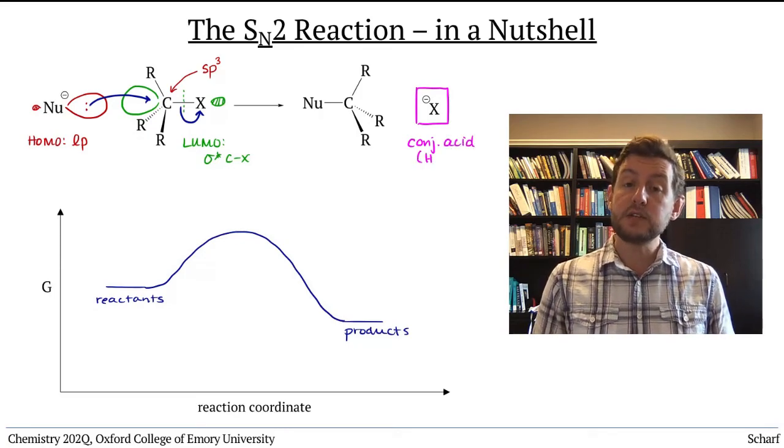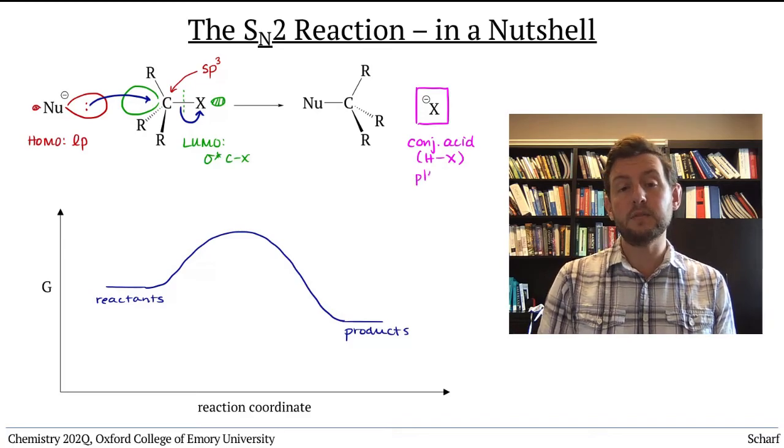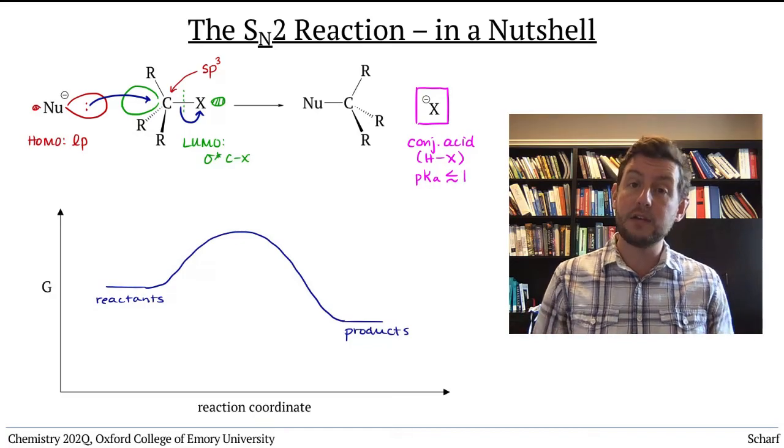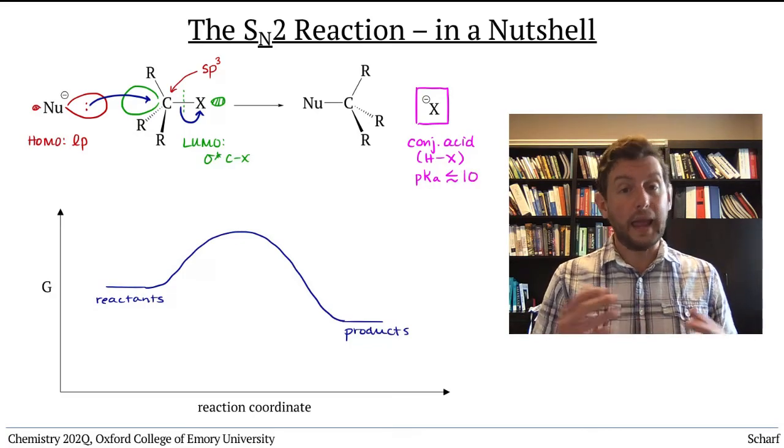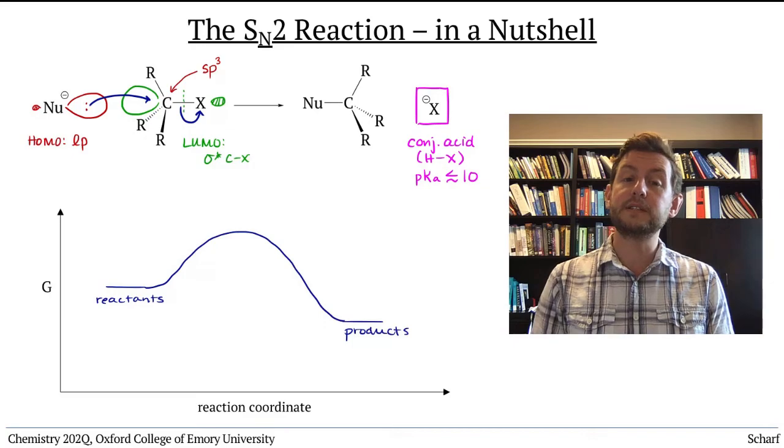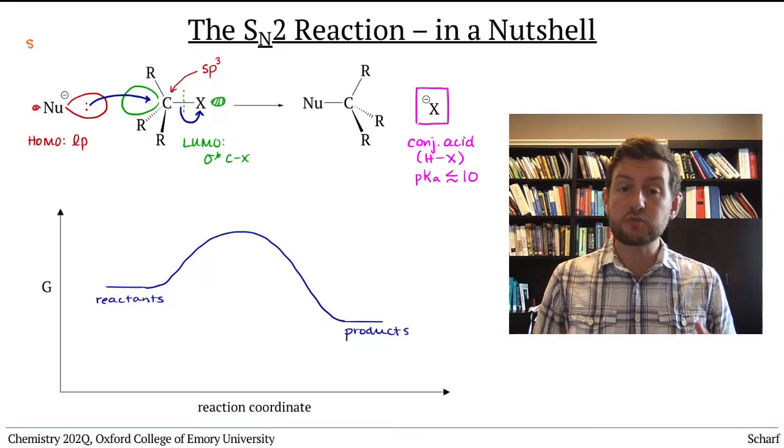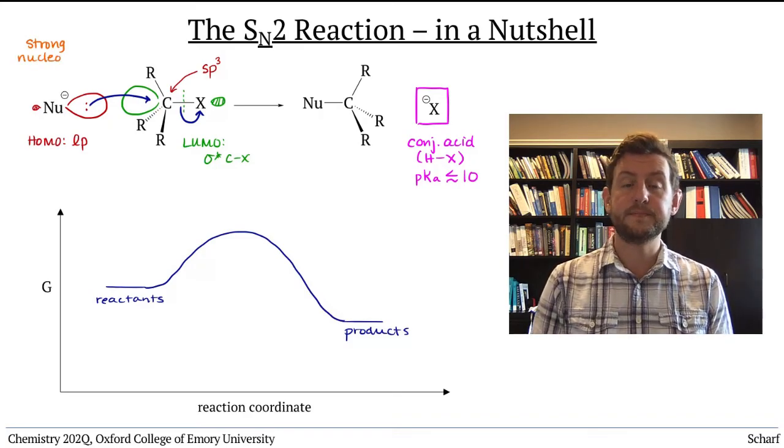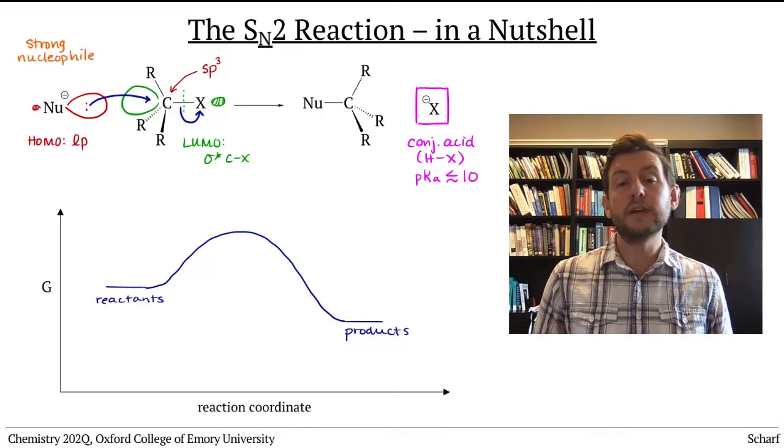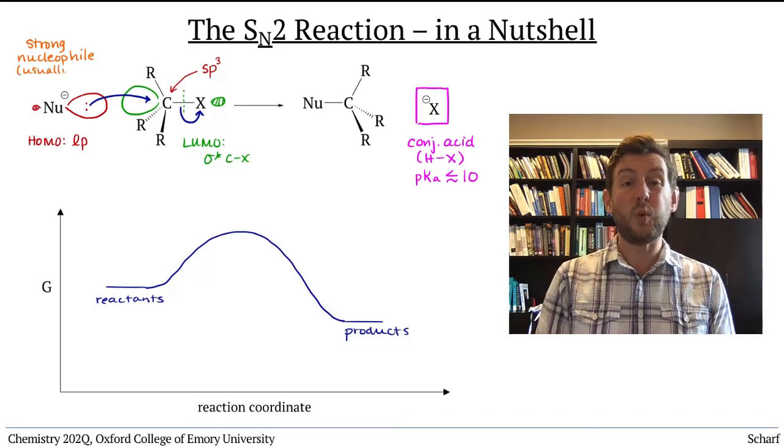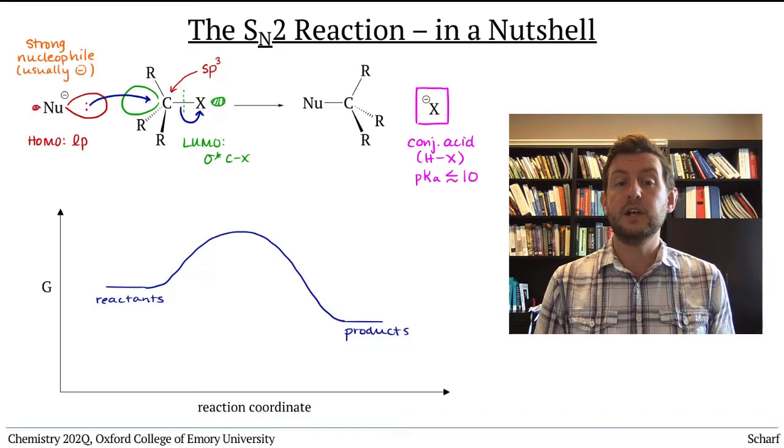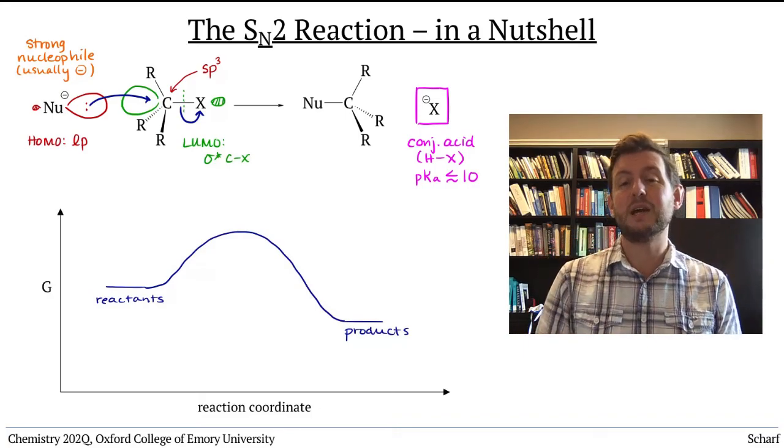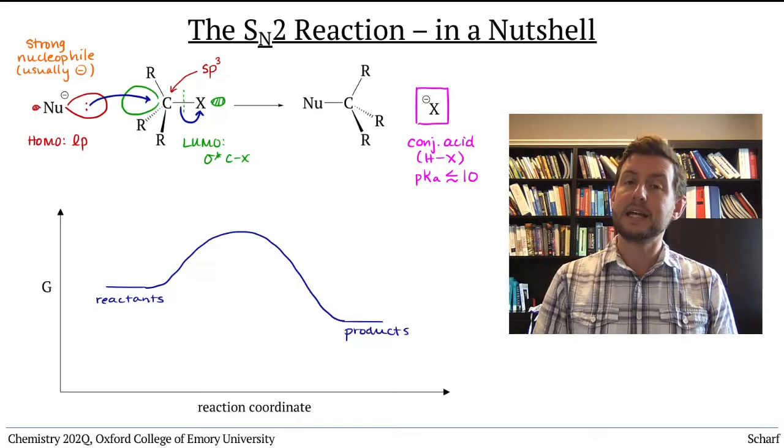For the SN2 reaction, the conjugate acid of the leaving group really needs to have a pKa of about 10 or below. And like all nucleophilic substitution reactions, the stronger the nucleophile, the more favorable the SN2 reaction. In general, SN2 reactions usually work best with quite strong nucleophiles, those with very high energy HOMOs. Most of the time, the nucleophile in an SN2 reaction has a negative charge.